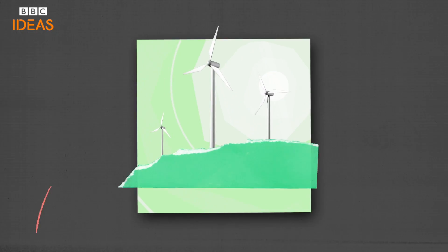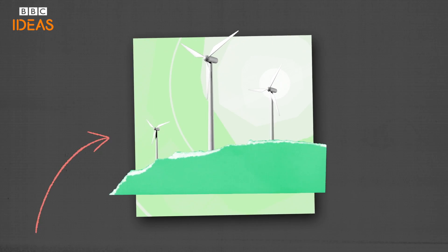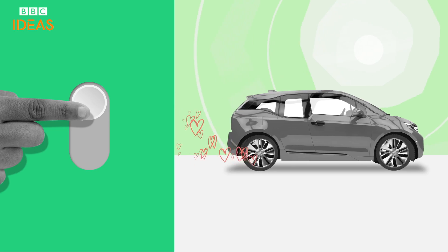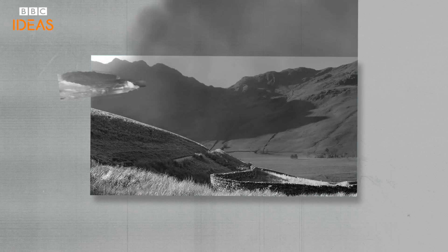Provided the electricity is from low carbon sources such as wind and solar, the switch to electric vehicles powered by lithium-ion batteries will stop billions of tons of carbon dioxide reaching the atmosphere.